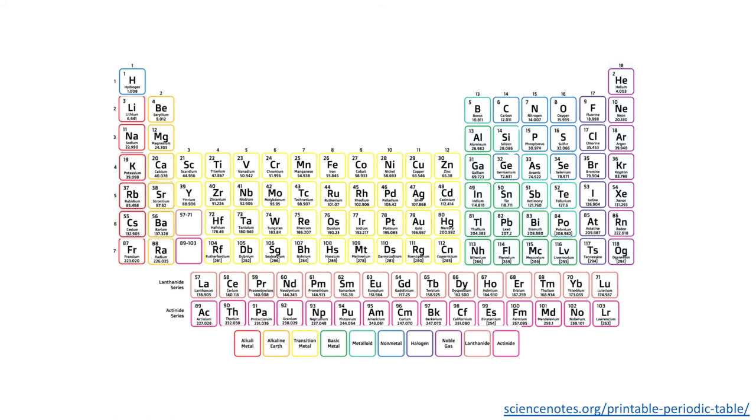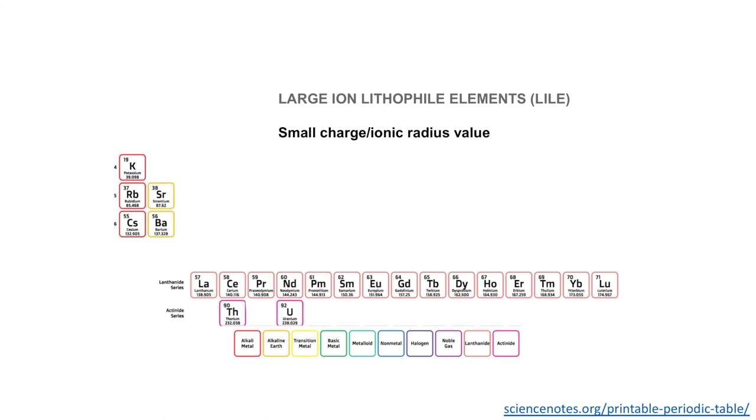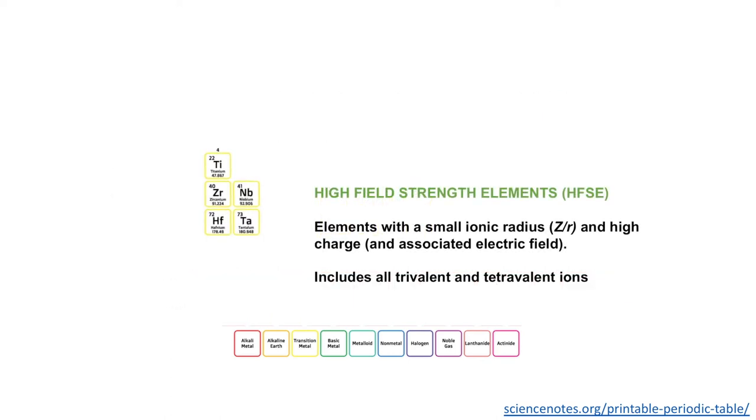Now we're going to look at it from a slightly different perspective, a bit more from a geochemical perspective. Firstly we have what's known as the large ion lithophile elements, sometimes abbreviated to L-I-L-E. These are elements that are generally incompatible and have a small charge to ionic radius. Next we have what's known as the high field strength elements, abbreviated sometimes to H-F-S-E. These are elements with a small ionic radius and a high charge, and with that high charge comes a high associated electric field, which refers to their name. These are all trivalent and tetravalent ions essentially.